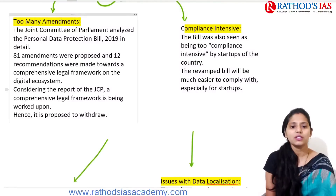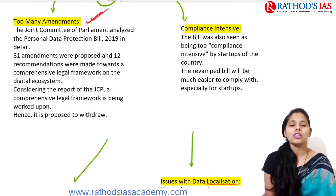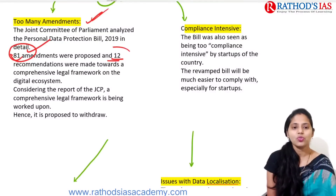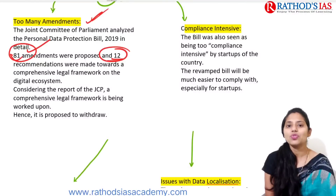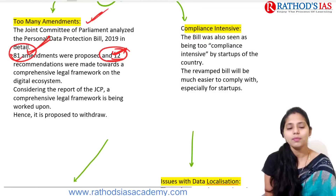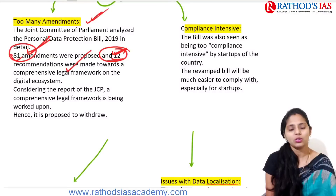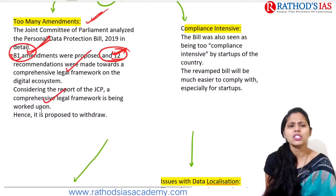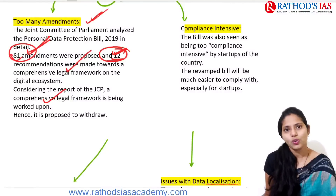The reasons behind the bill's withdrawal are: first, it had too many amendments. A joint committee of parliament analyzed the Personal Data Protection Bill of 2019 in detail and found about 81 amendments were proposed, along with 12 recommendations toward a comprehensive legal framework for the digital ecosystem. The committee's report highlighted that a comprehensive legal framework is being worked upon, and they proposed to withdraw this bill due to the excessive amendments and recommendations.